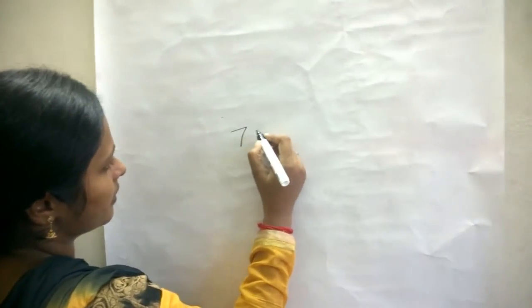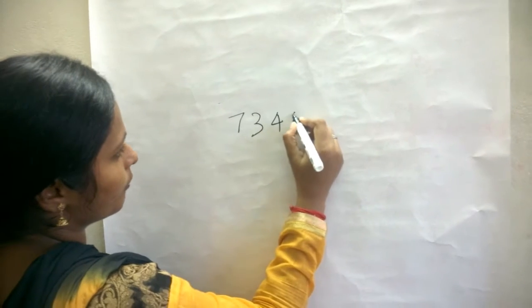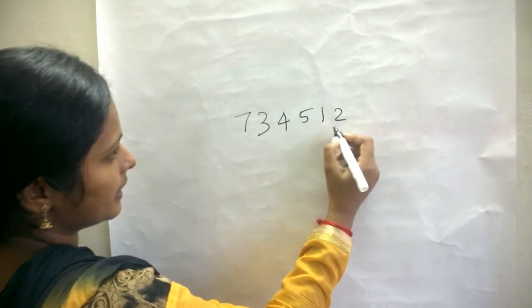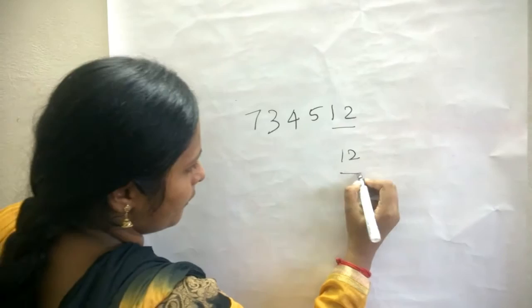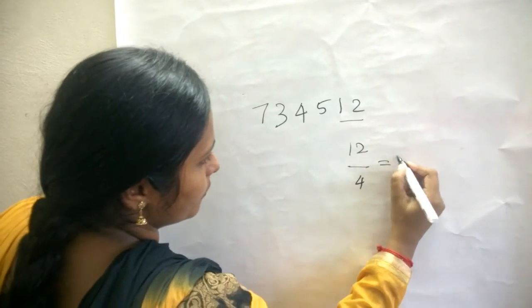consider number 734512. Take this last 2 digits, 12, and divide it by 4, which is equal to 3.